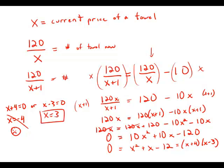That makes sense. And indeed, if the towels cost $3 now, we could buy 40 of them. And if it went up $1 to $4, we could buy 30 of them, 10 fewer. So, that in fact works. And this is answer choice C.